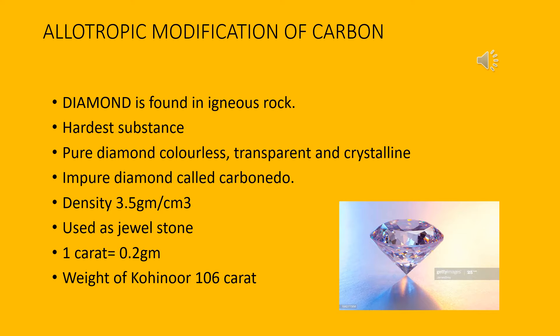Now, uses of diamond. Black diamond or carbonado is used for cutting and polishing glass, precious stones and different hard substances. This type of diamond is called bort. Due to its sparkle, diamond is used as a jewel stone.